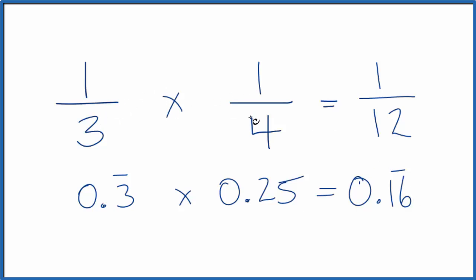So one-third of one-fourth equals one-twelfth or 0.16 repeating. This is Dr. B and thanks for watching.